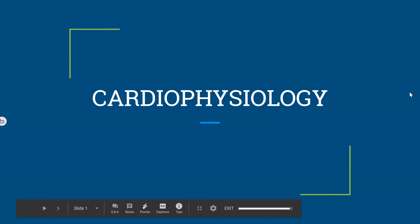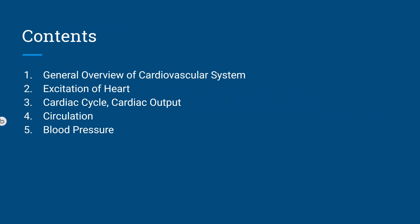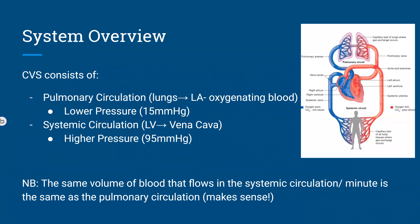Welcome to this lecture on cardiophysiology — it's pretty high-yield stuff. We're going to go over a general overview of the cardiovascular system, excitation of the heart, cardiac cycle, cardiac output, circulation, and we'll likely touch on blood pressure. Basically, the cardiovascular system consists of a pulmonary circulation and a systemic circulation.